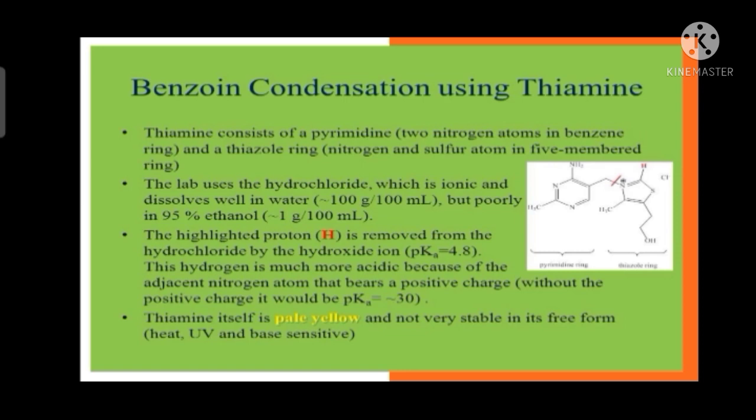The greener reagent that we are using here is thiamine. Before knowing anything about the reaction and mechanism, let us know what thiamine is. Basically thiamine consists of a pyrimidine ring and a thiazole ring. Pyrimidine ring is a benzene ring which contains two nitrogen atoms. The first ring is pyrimidine. The second ring is thiazole - it contains one nitrogen and one sulfur. This is the complete structure of thiamine.